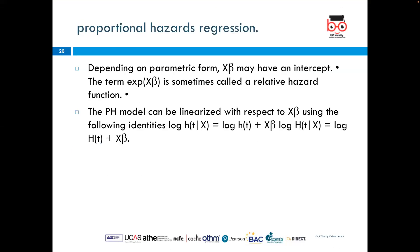We have proportional hazard regression. Depending on parametric form, that may have an intercept. The term exp is sometimes called a relative hazard function. The PH model can be linearized with respect to that using the following identity: log and the formula.